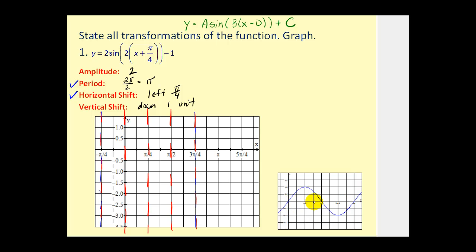We've handled the period and horizontal shift. The center of the graph is usually the x-axis, but since it's shifted down one unit, we'll use y equals negative one as the center. With an amplitude of two, we start at the center line at negative π over four. The next fourth is a maximum — two units up from the center line, so y equals one. The next fourth is back at the center line. The third fourth is a minimum — two units below the center line at negative three. Then back up to the center line to complete the cycle.